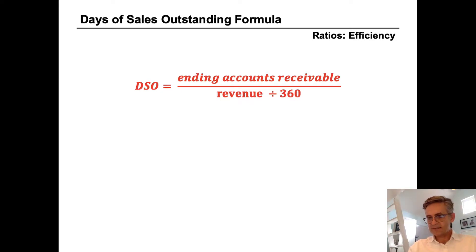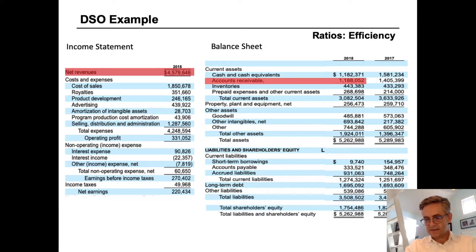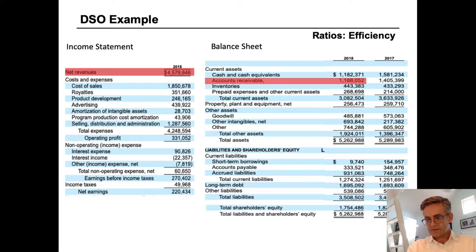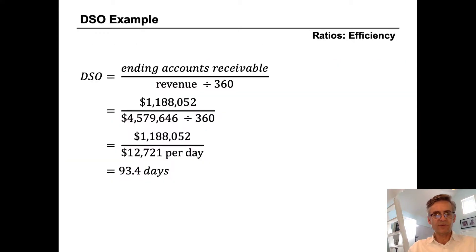So let's take a look at an example using Hasbro. We're going to need both the income statement and balance sheet for Hasbro. We can see that the ending accounts receivable in the period is 1.188 billion dollars and the revenue for the same period was 4.579 billion dollars. So we have the two items that we need and we can plug them into our formula.